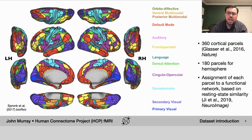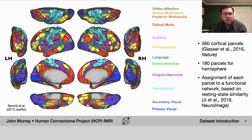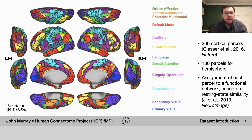We also include the assignment of each parcel to a given so-called functional network. The functional networks are defined based on the similarity of the activity time courses of different regions in the resting state condition. We've color coded in this image the parcels according to their functional network, with the names of the functional networks shown on the right. Functional networks are simply a useful way to describe one's data in a reduced fashion.